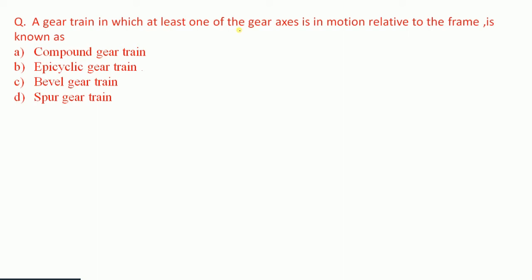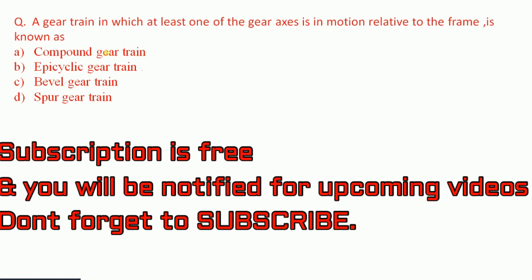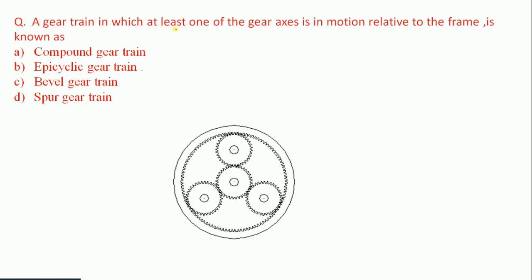Question 12: A gear train in which at least one gear axis is in motion relative to the frame is known as — compound gear, epicyclic gear, bevel gear, or spur gear? In an epicyclic gear train, at least one gear axis moves relative to the frame. Therefore the answer is epicyclic gear — option B.